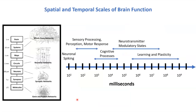There are many temporal and spatial scales by which the brain is organized. This nice diagram from Patricia Churchland gives a sense of the complexity across everything from the brain down to molecules. The scales are continuous, and the question I often have is: what level of detail is most relevant for understanding principles of brain function?